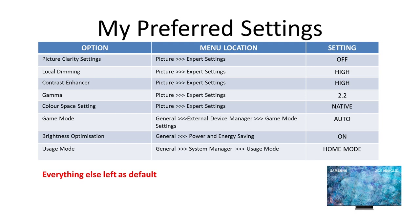Next is Gamma. Gamma can be a matter of taste, so feel free to try them all and see which you prefer. I find 2.2 to be the most accurate, balanced, and pleasing — it's also the setting recommended by professional calibrators. Next is Colour Space Setting, which refers to the range of colour that the TV supports. You can experiment with this to see which you prefer, but I prefer this set to Native.